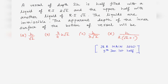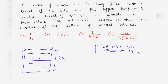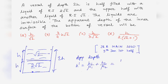Now coming to this problem: a vessel of depth 2h is half filled. The refractive index of the lower portion is 2√2 and of the upper portion is √2, with each layer having depth h. The apparent depth is h1/μ1 + h2/μ2 = h/(2√2) + h/√2, which gives 3h/(2√2), or equivalently 3h√2/4. So option B is correct.